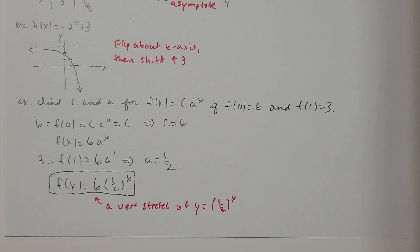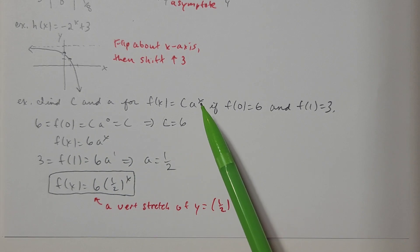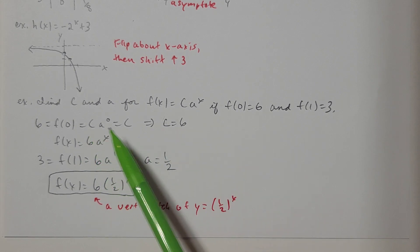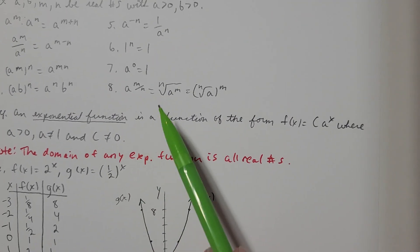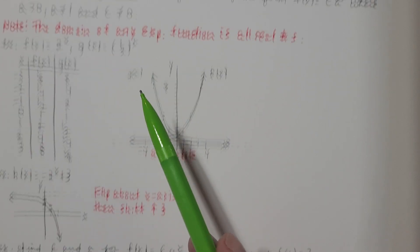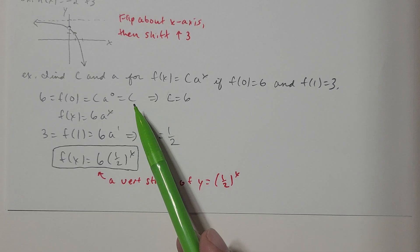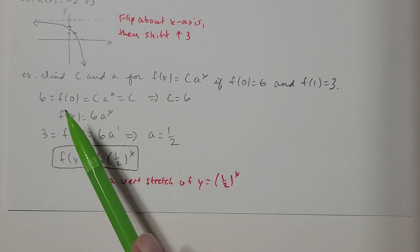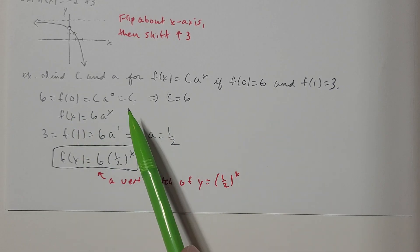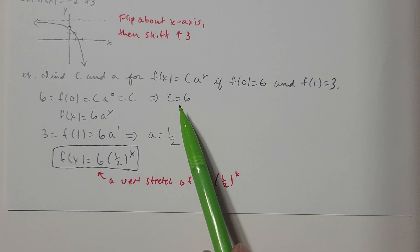So f(0) means that if I replace x with 0, I have C times A to the 0. Anything to the 0 power is always 1, right? That's one of my laws of exponents there. So I'm going to have C times 1 is C. Now f(0) is 6. So in a way, they're telling me that C is 6 with that.